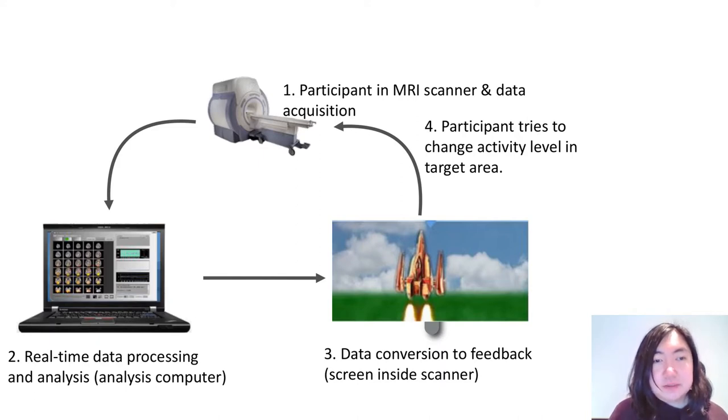Currently, the treatment for problematic voice hearing mainly involves the use of antipsychotic medication and cognitive behaviour therapy for psychosis, also called CBTP. Unfortunately, these interventions can each carry their own side effects and are only effective in a limited number of individuals. This is why we urgently need new interventions that can be used when these first-line treatments fail.